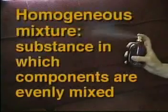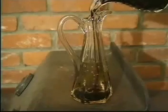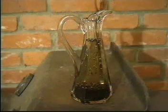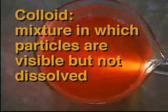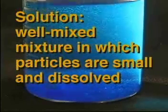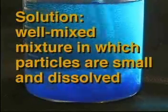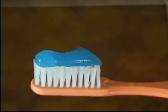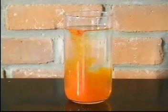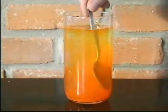In summary, a mixture is either well-mixed, called a homogeneous mixture, or it is not well-mixed, called a heterogeneous mixture. And there are three types of mixtures: colloids, in which the particles are visible and not completely dissolved; suspensions, in which the particles are of different sizes and settle out over time; and solutions, in which the particles are dissolved and are evenly mixed. You use mixtures and solutions every day. Try to notice them and classify them. You just might be surprised at the number of mixtures and solutions you use.